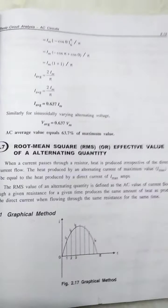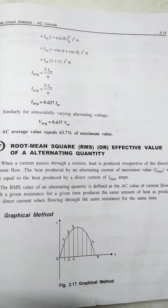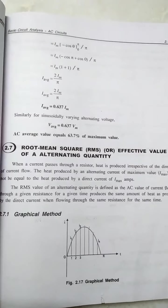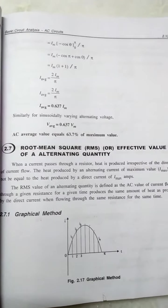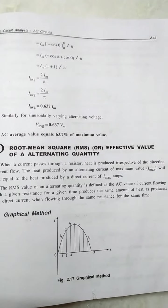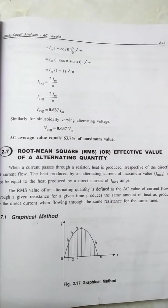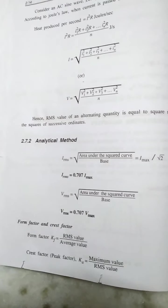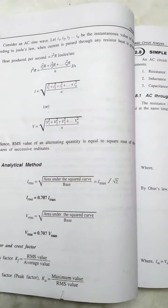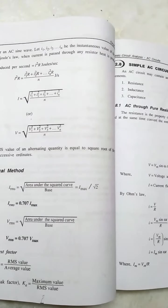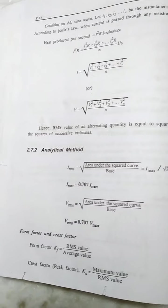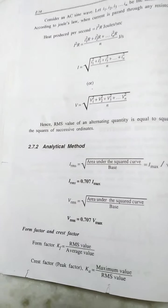Next is the root mean square or effective value of an alternating quantity. When a current passes through a resistor, heat is produced irrespective of the direction of current flow. Heat produced by the alternating current of maximum value will not be equal to heat produced by a direct current. Therefore, the RMS value of an alternating quantity is defined as the AC value of current flowing through a given resistance for a given period of time which produces the same heat as that produced by DC current flowing through the same resistance for the same period of time. The RMS value equals the square root of the area under the squared curve divided by the base. RMS value of current is Im/√2, and RMS value of voltage is Vm/√2. The form factor is the ratio of RMS value to average value, and the crest factor is the ratio of maximum value to RMS value.